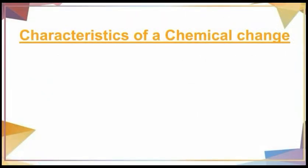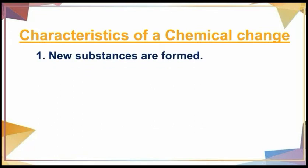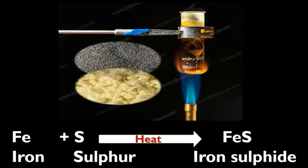Characteristics of a chemical change. First, new substances are formed. Take some iron powder and sulphur powder in a test tube and heat them. A grey-black solid is formed which is not attracted by a magnet and is insoluble in carbon disulfide. That means a new substance known as iron sulphide is formed, which has properties completely different from those of iron and sulphur. Iron is attracted by a magnet and sulphur is soluble in carbon disulfide. Iron + Sulphur → Iron Sulphide.